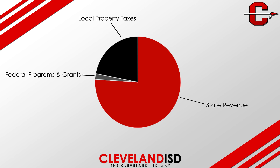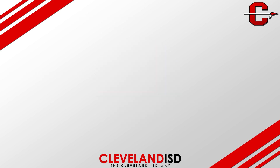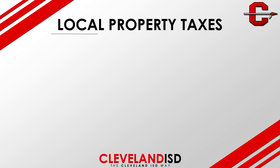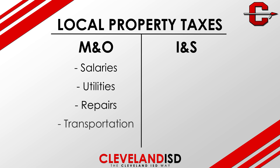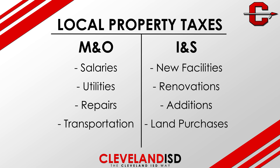Let's dive into how local property taxes are divided and spent. When local property taxes are collected, they are split into two separate funds: Maintenance and Operations, or M&O, and Interest and Sinking, or I&S. M&O funds cover the day-to-day operations of the district including salaries, utilities, repairs, transportation costs, and more. It's important to note that there are only enough M&O funds to cover the day-to-day expenses of the district. I&S funds cover the construction of new facilities, renovations and additions, land purchases, and more.